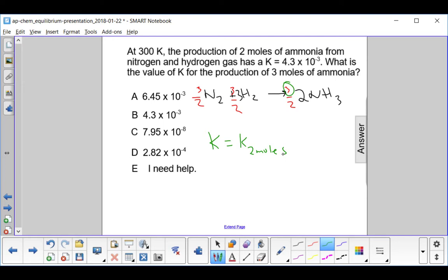and raise it to whatever this factor is that I changed it by, so to the 3 halves power. So that would be 4.3 times 10 to the minus third to the 3 halves power,